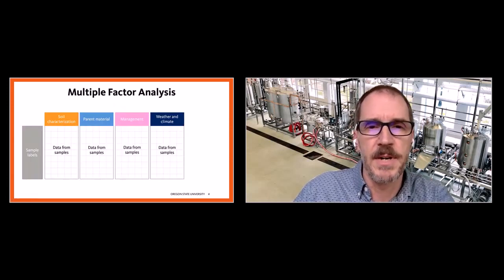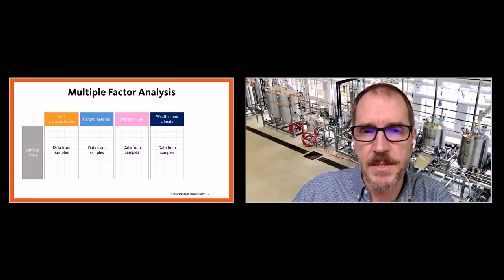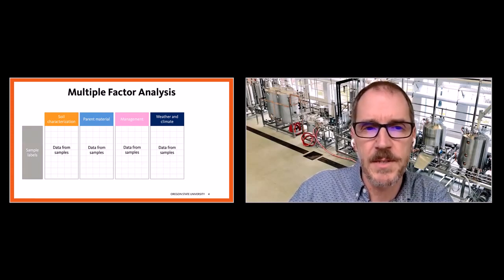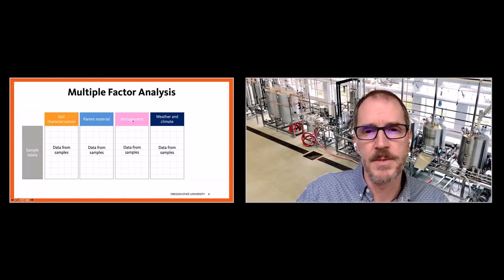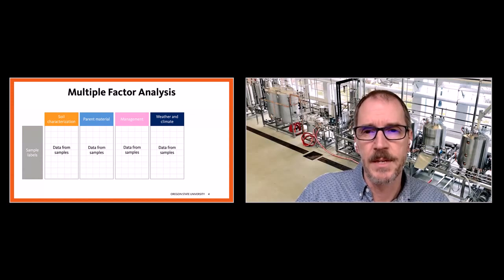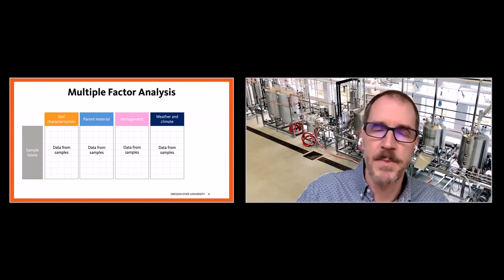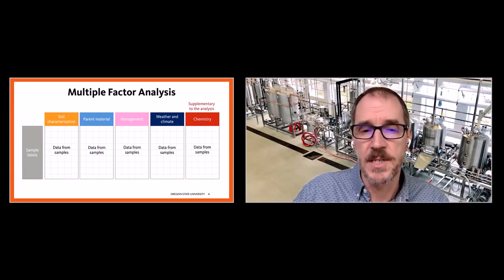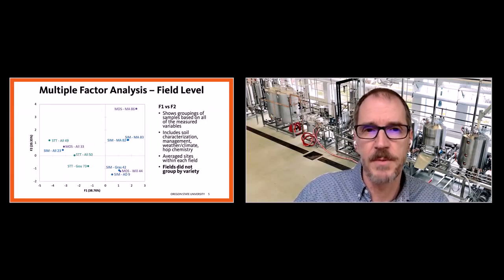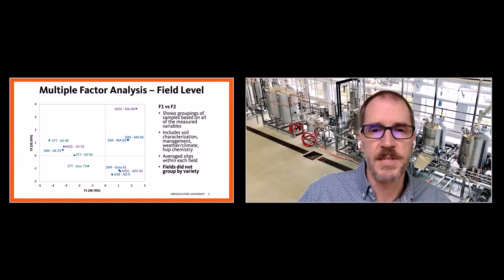The type of statistical analysis we're doing is basically a multiple factor analysis, whereby we take different sets of data — the soil characterization and parent material data from Andy, along with the management data. This is principally fertilization and sprays, as well as weather and climate data, and begin to map those together, adding the chemistry data as supplementary material. From the MFAs, we get biplots that give us a sense of similarities and differences.